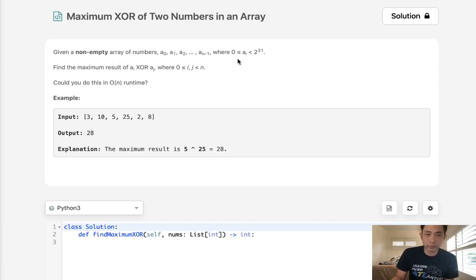Given a non-empty array of numbers where AI is between 0 and 2 to the 31st power, find the maximum result of AI XOR AJ. Can you do this in O(n) runtime?